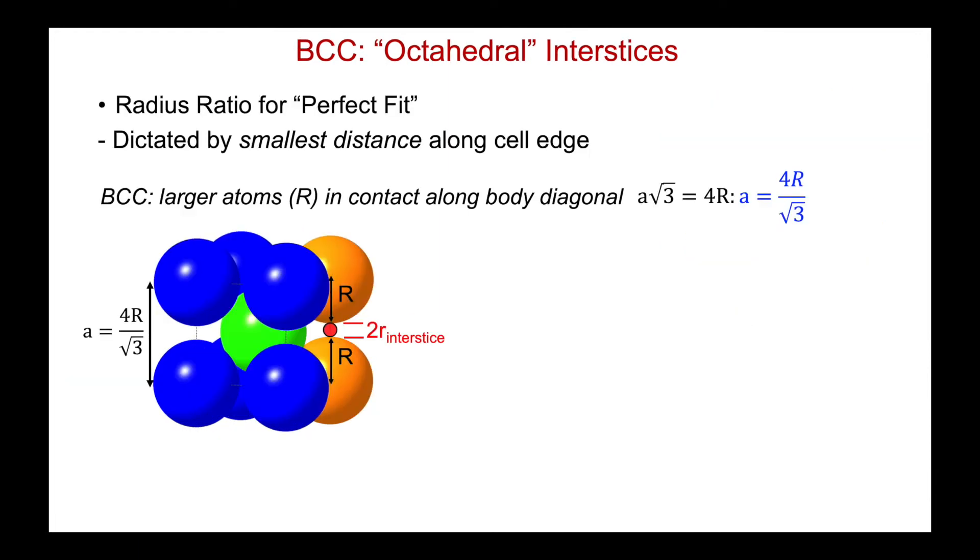Well, now we can use simple geometry to figure out what the radius ratio would be for a perfect fit of an atom into this interstice. Because it's distorted, to fit it in there, it's going to be constrained by the smallest distance to the neighboring atoms. And that's the one along the cell edge. As we mentioned, BCC, the larger atoms, which are called radius R, are in contact along the body diagonal. So I know the length of the unit cell A is 4R over root 3. Now if I use geometry to evaluate the atom contacts along this shorter interstice atom distance along the cell edge, I will see that A is equal to R plus another R plus 2 lowercase r, where lowercase r is the radius of the interstice. And so here we'll find the relationship between the radius of the interstice and those larger atoms for a perfect fit is equal to 0.155.